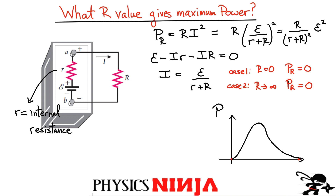Here I'm plotting power dissipated by the load versus the value of R. The two red points correspond to the cases R = 0 and R → ∞, both giving zero power. There must be a maximum somewhere in between, so let's find that actual value of R.